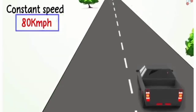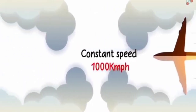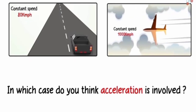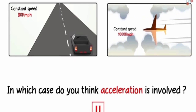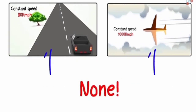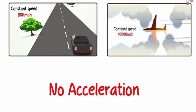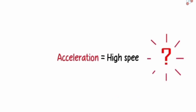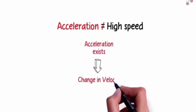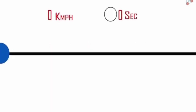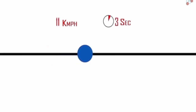Consider two examples: a car traveling in a straight line at a constant 80 km/h, and a plane traveling in a straight line at a constant 1000 km/h. In which case is acceleration involved? Neither — in both cases velocity is not changing, so there is no acceleration. Most people relate acceleration to high speed, but that is clearly not true. Acceleration only exists when there is a change in velocity. Velocity is speed with direction — it is a vector quantity.